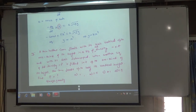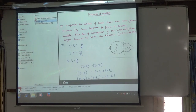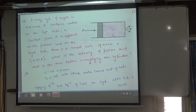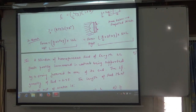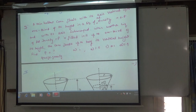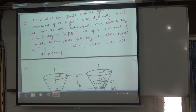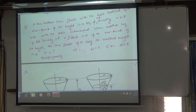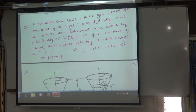We have to solve this next question. A thin hollow cone floats with its axis vertical, submerged up to one third of its height, in a liquid of relative density 0.8. The cone is hollow and it floats — one third of its height is in the liquid of relative density 0.8.